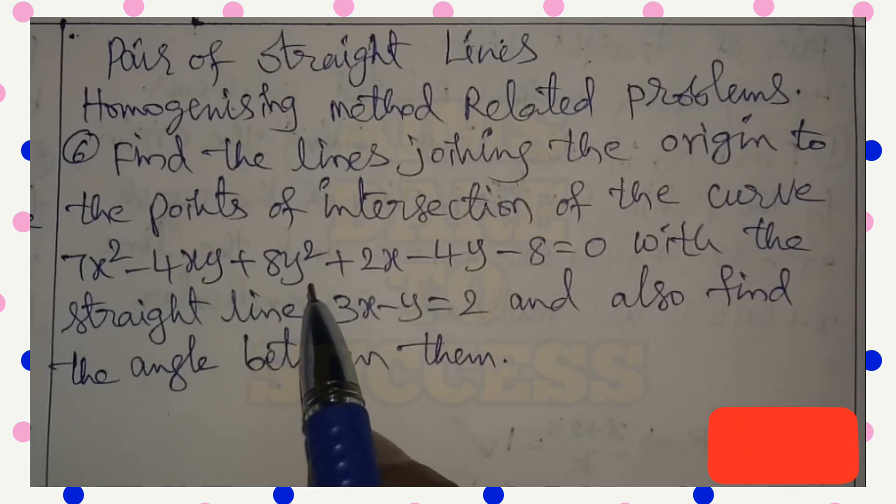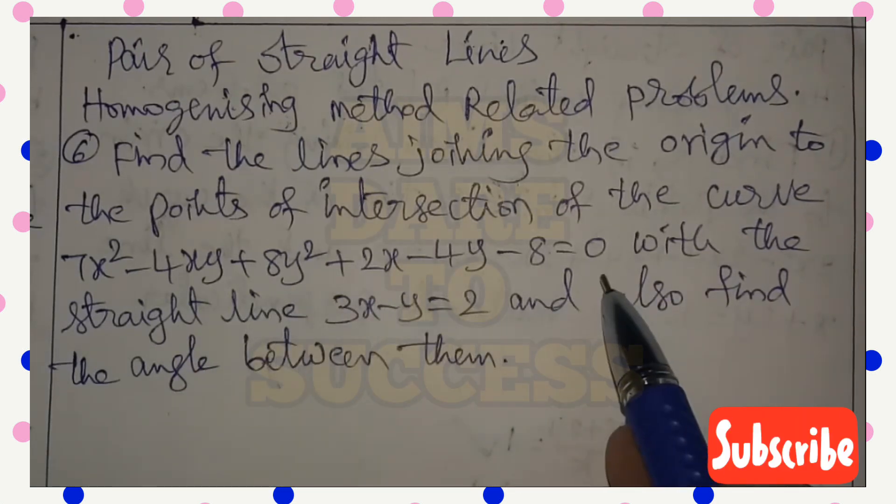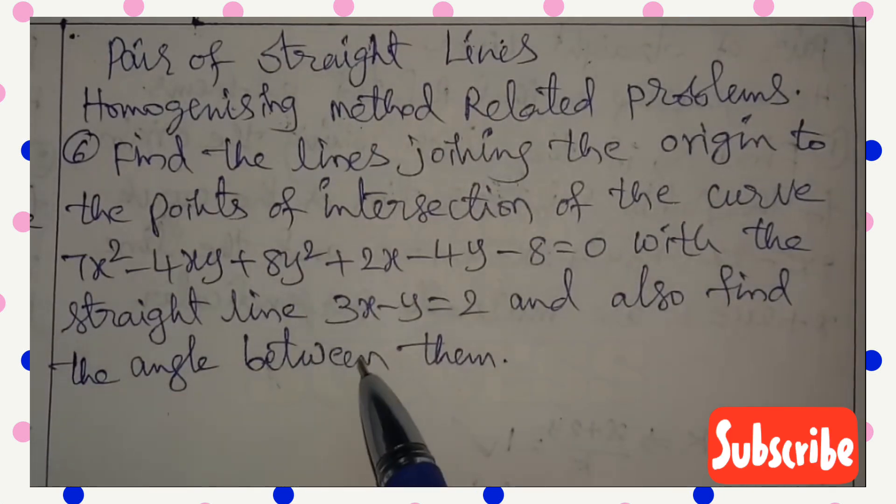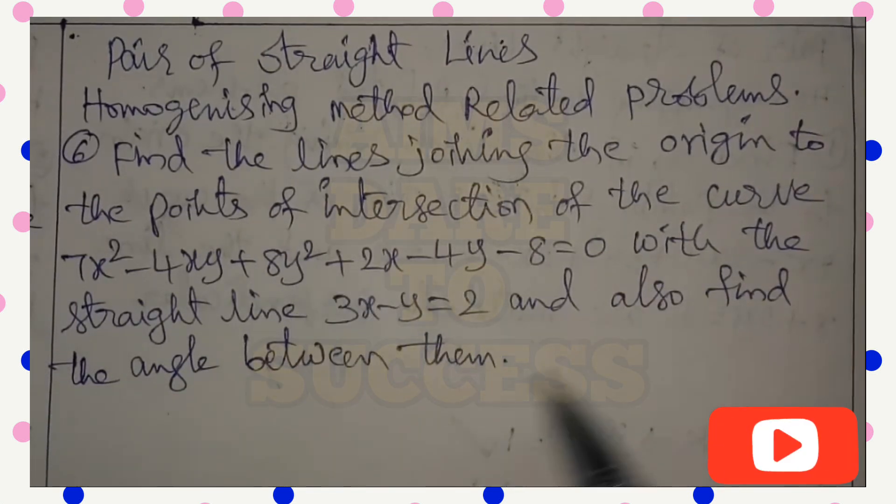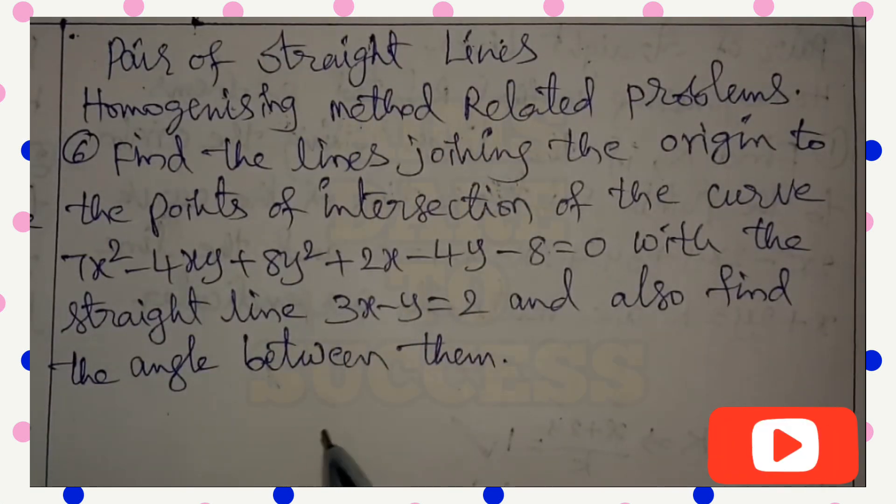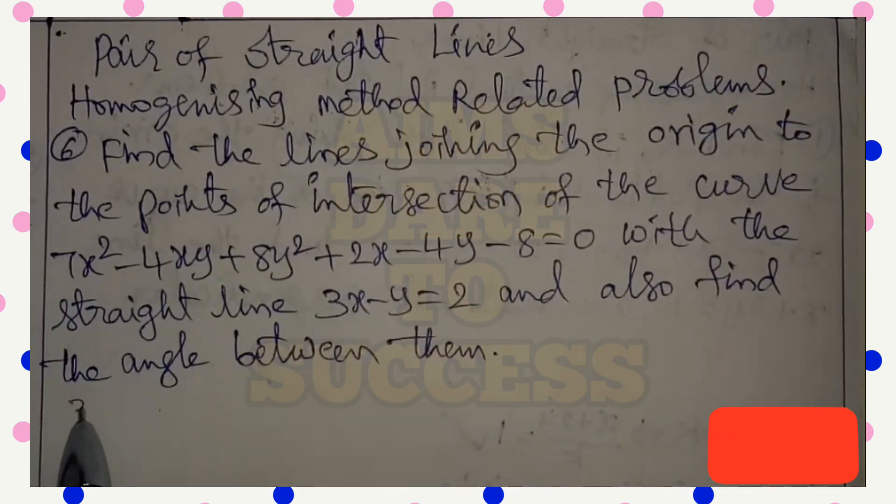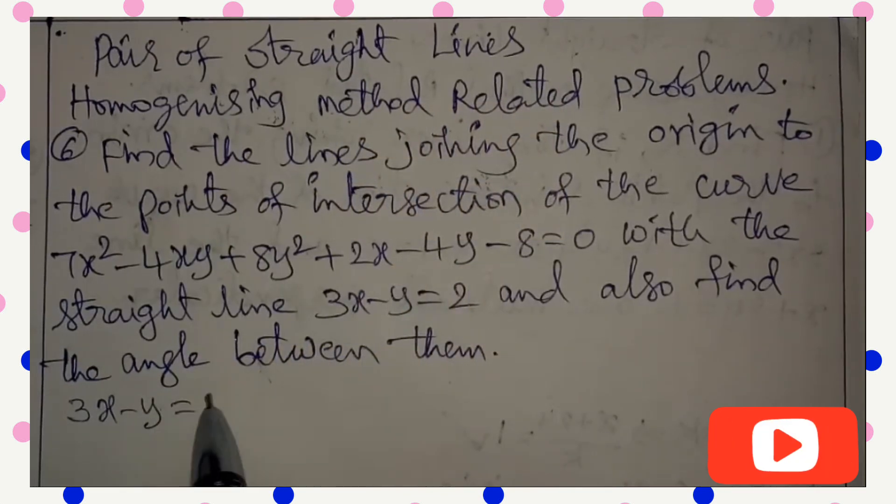Find the lines joining the origin to the points of intersection of the curve 7x² - 4xy + 8y² + 2x - 4y - 8 = 0 with the straight line 3x - y = 2 and also find the angle between them.